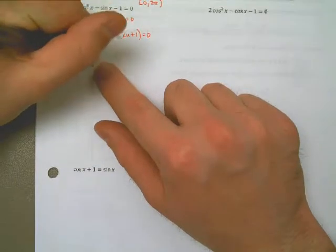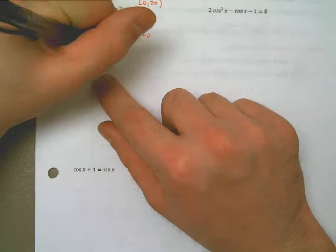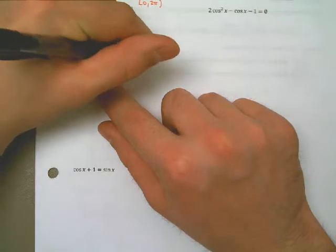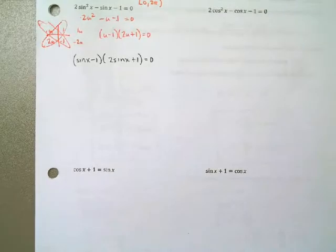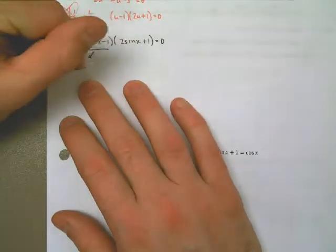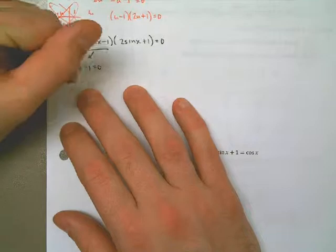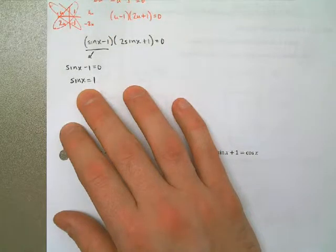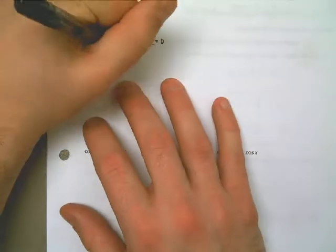And this yields me two different equations. From this one, I could have said that sin x - 1 = 0, which means sin x = 1. Or, from the right side, I could have said that 2sin x + 1 = 0, so that means that sin x = -1/2.